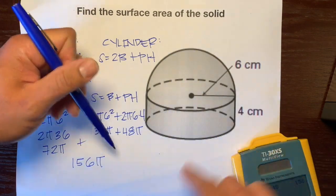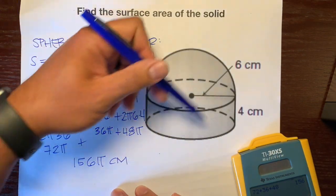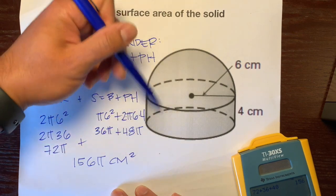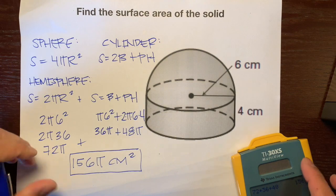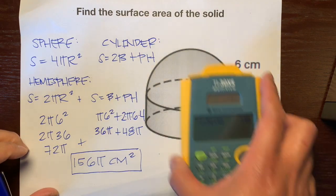which is 156. And don't forget we're talking about π here. So, π centimeters. And it's the number of squares that fit on the surface. 156π centimeters squared.